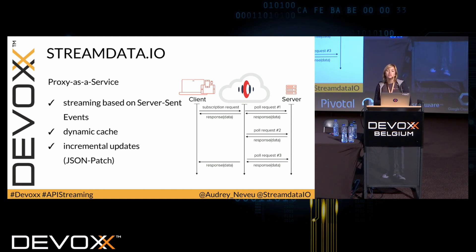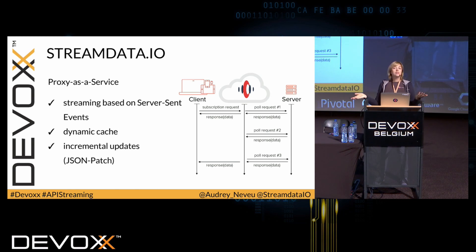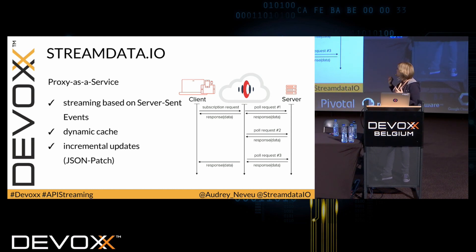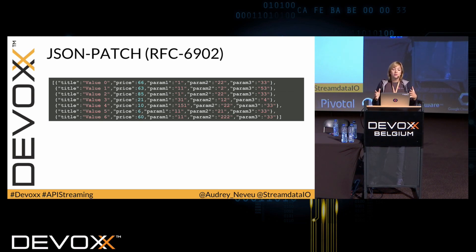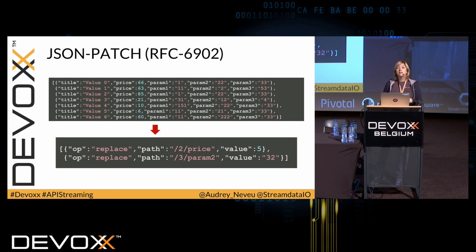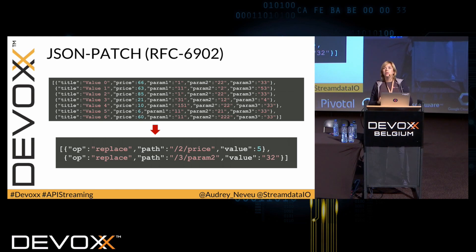And we make incremental updates using JSON patch. For example, on the first poll request we retrieve the first snapshot of data. On the second poll, nothing has changed — we won't push any data, because it would be complete nonsense to send you the whole document again. On the third poll, if only a few fields of your document have changed, we make incremental updates. JSON patch defines a set of operations that can be applied to a JSON document — replace, remove, et cetera. So instead of receiving the whole document again, you receive just the patch, then use a JSON patch library to apply it to your document. That's it.